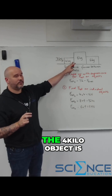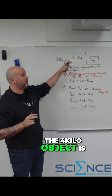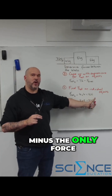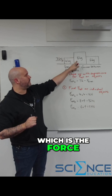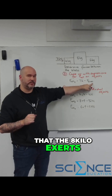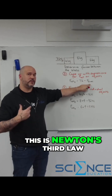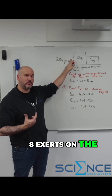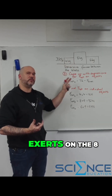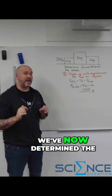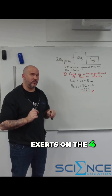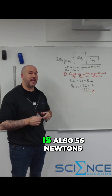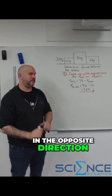The net force on the 4 kg object is the only force towards the right — 72 newtons — minus the only force acting back towards the left, which is the force the 8 kg block exerts on the 4 kg block. Keep in mind this is Newton's third law — an action-reaction pair. The force the 8 exerts on the 4 will be equal and opposite to the force the 4 exerts on the 8. We've determined that the force the 8 exerts on the 4 is 56 newtons, and by extension the force the 4 exerts on the 8 is also 56 newtons in the opposite direction.